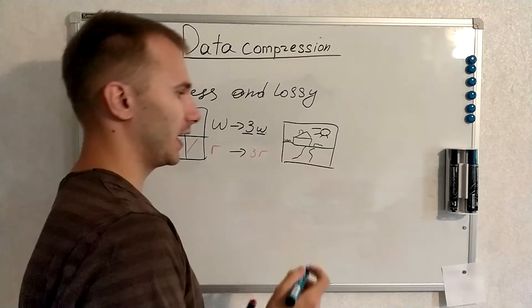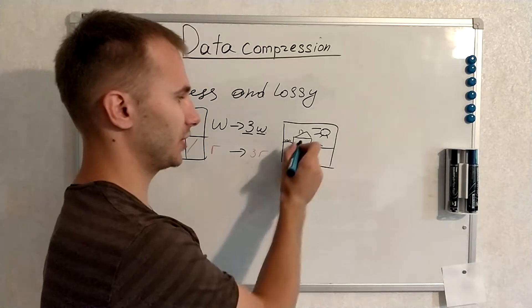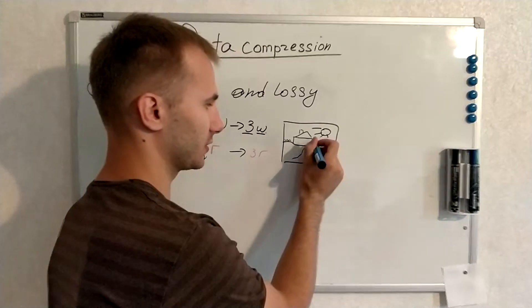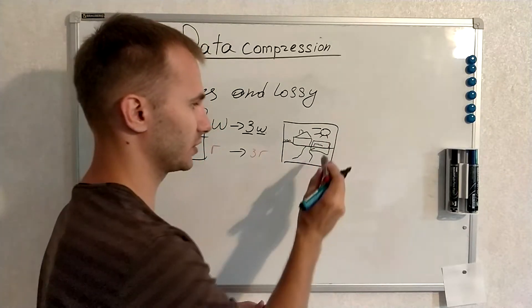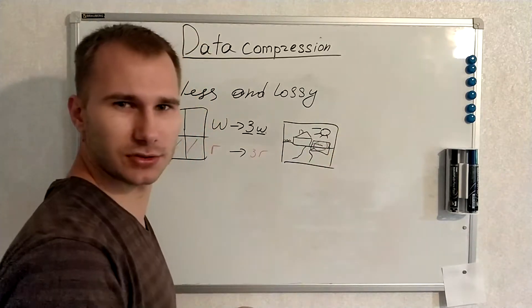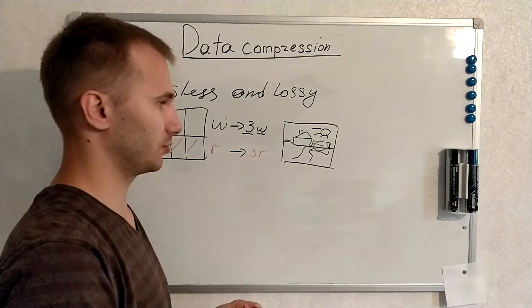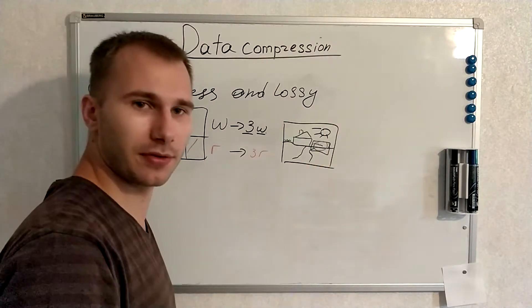And human eye perceives shapes better than small details. Let's say we have here in this region some small details which are not so important for us to determine what's actually happening on the image.